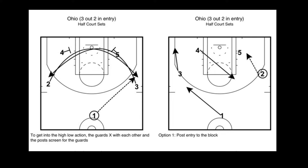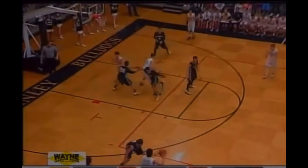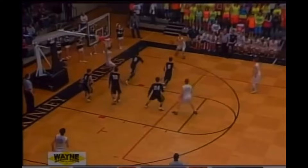What is up internet basketball junkie? Today we're going to look at Ohio, an action to feature the high-low game. From a three out two in alignment and utilizing baseline screening action, we execute a seamless entry pass to the wing, triggering a weak side post flash that shapes our coveted high-low spacing.